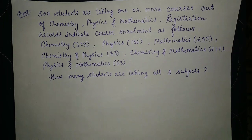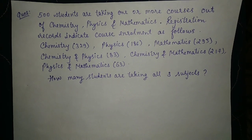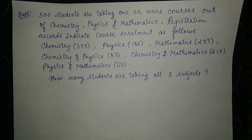Hi friends, the question is 500 students are taking one or more courses out of chemistry, physics and mathematics.